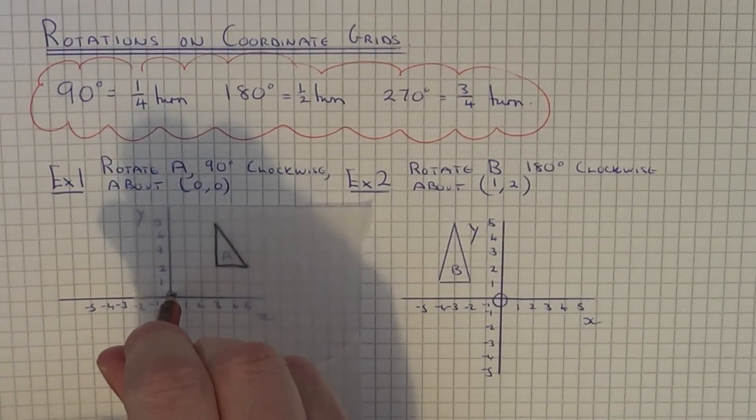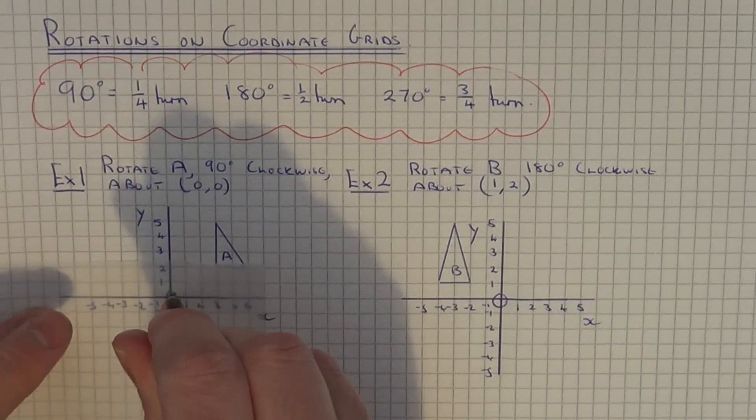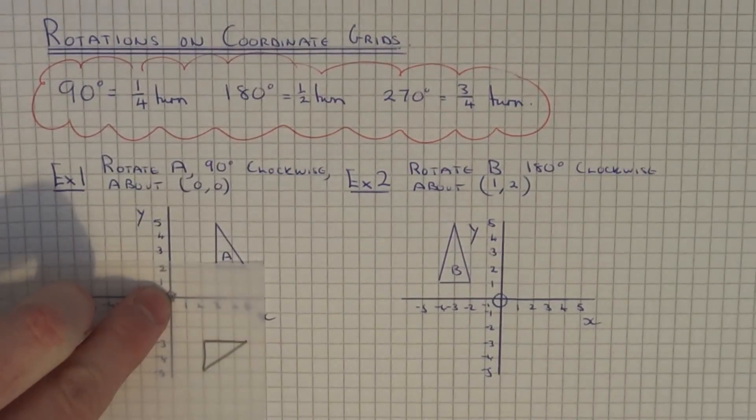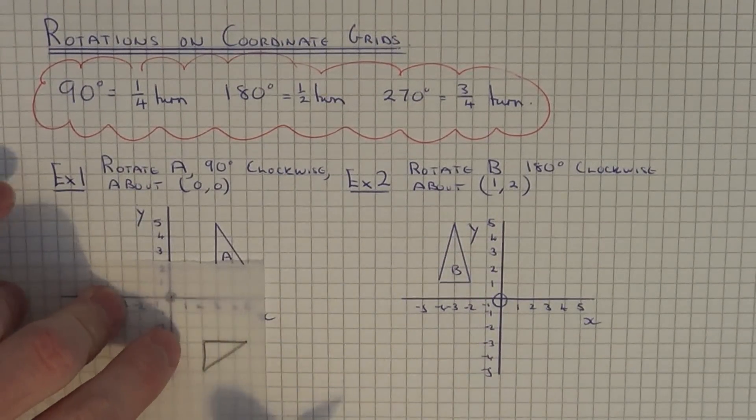Also make sure you do it clockwise. There you go, that's a quarter turn. Once you've done that, all you need to do is mark on the points on your page.